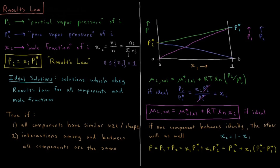When do solutions behave ideally? This is an approximation, true under certain conditions, and more likely to hold the more closely these guidelines are followed. It's true if all components in the solution have similar size and shape — similar molecular weight and approximately the same topology. For example, hexane and pentane are likely to form nearly ideal solutions, whereas benzene and water are not.